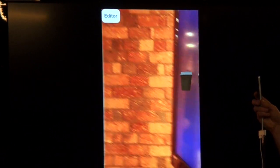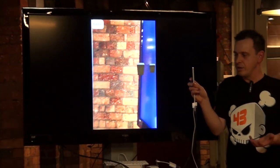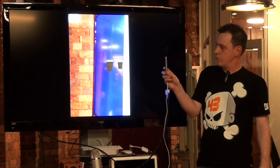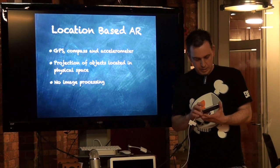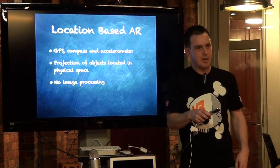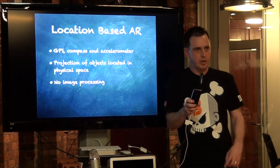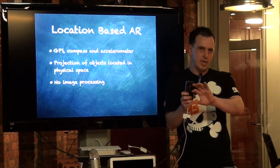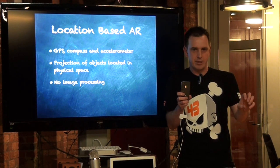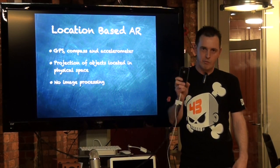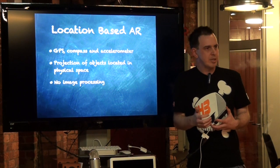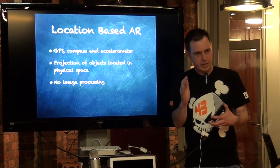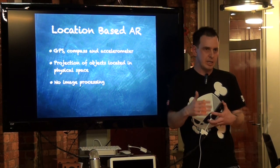That's as simple as location-based gets anyway. We're really using the sensors in the phone to determine where the user is in the real world and which way the device is pointing, to superimpose information and help them orient themselves and find different things. This sort of AR doesn't normally do image processing — you could switch the camera off and still see the objects projected on screen, though the camera makes it a lot more useful.